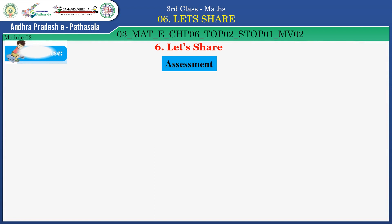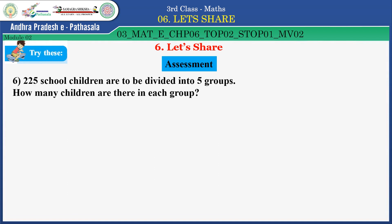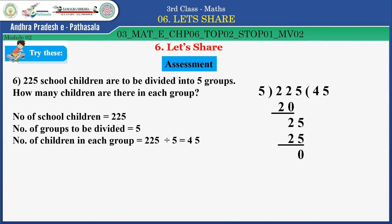Children, try this problem. 225 school children are to be divided into 5 groups — how many children are there in each group? You have to do division: 225 divided by 5. Number of school children: 225. Number of groups: 5. Number of children in each group equals 225 divided by 5, which gives 45. So, 45 children are in each group. Do this sum in your notebook and show to your teacher.